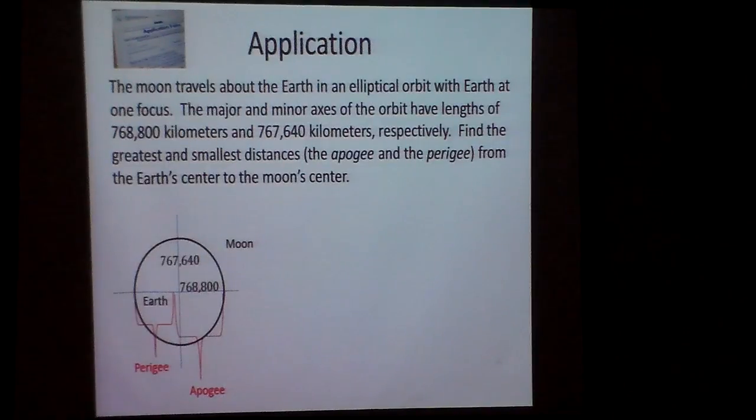Find the greatest and smallest distances, the apogee and perigee, from the earth's center to the moon. Now, it's going to be basically the closest when it's about probably right here, and the furthest when it's there. My elliptical orbit's probably not quite pictured quite right, so it probably should be a little more horizontal than vertical. And we have a special name for these particular things right here.